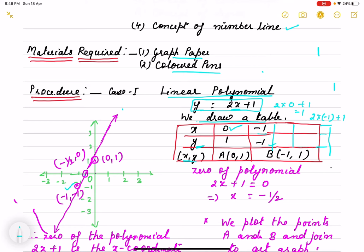So we plot the points here: minus 1, minus 1 and 0, 1. So we join the graph. We see that it intersects at minus half, 0. And if you find out zero of polynomial, that means we equate it to 0. 2x plus 1 equals 0, we get x is minus half.